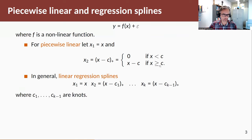More generally, if you wanted more of these bends, this is an example of linear regression splines where we have c₁ to c_{k-1} as knots. We put the knots and the bends happen at those places.